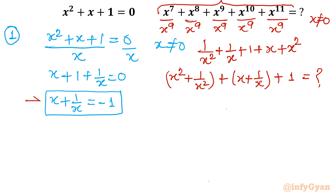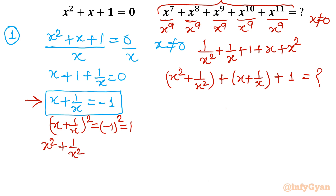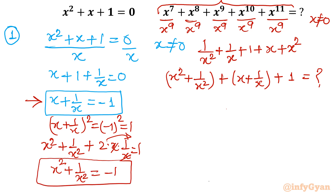Now we know that x plus 1 over x equals minus 1. I will square both sides: x plus 1 over x whole square equals minus 1 whole square, which is 1. Expanding: x square plus 1 over x square plus 2 equals 1. Taking 2 to the right side: x square plus 1 over x square equals minus 1. Putting the values in: minus 1 plus minus 1 plus 1, so minus 1 minus 1 plus 1 equals negative 1. Our answer is negative 1.